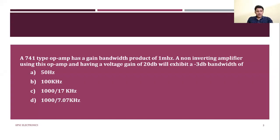First question: A 741 type op-amp has a gain bandwidth product of 1 megahertz. A non-inverting amplifier using this op-amp and having a voltage gain of 20 dB will exhibit a minus 3dB bandwidth of: option A 50 Hz, option B 100 kilohertz, option C 1000/70 kilohertz,